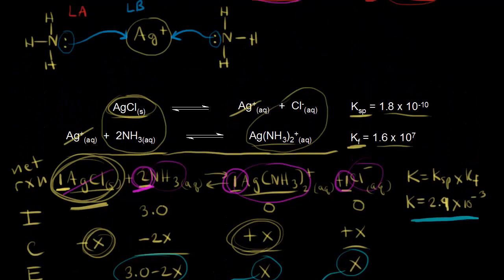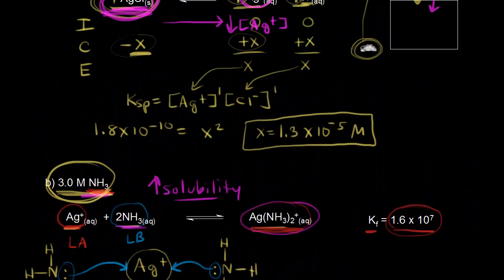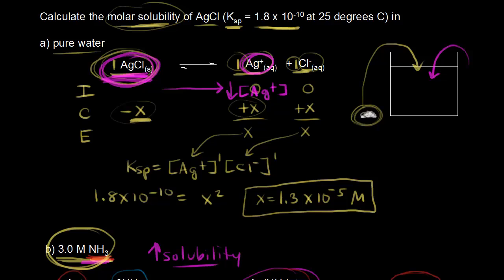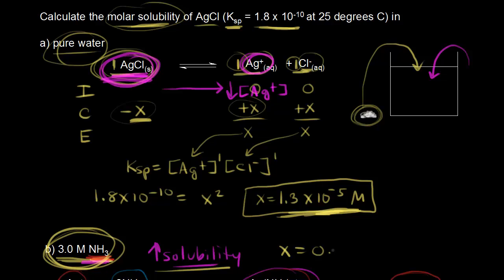Let's compare the molar solubilities. In pure water, the molar solubility of silver chloride is 1.3 times 10 to the negative 5 molar, which isn't very soluble at all. But with ammonia present, we've increased the solubility to 0.14 molar. Obviously 0.14 molar is a lot larger than 1.3 times 10 to the negative 5. So the formation of a complex ion increased the solubility of our slightly soluble compound silver chloride.